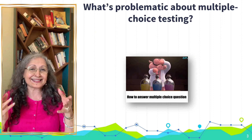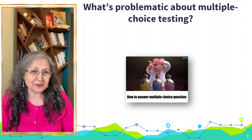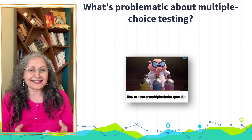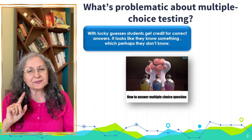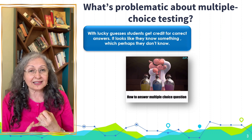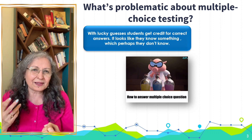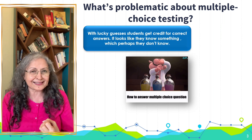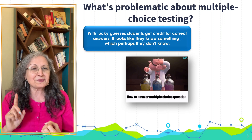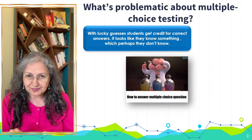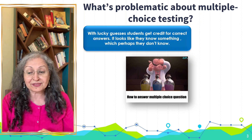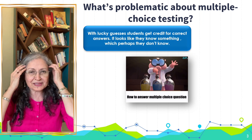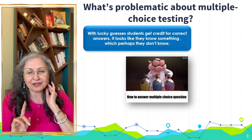That's the way children attack multiple choice questions — and many adults as well. One of the problems is that just by some lucky guesses, the students can get it right. So it's impossible to know really whether they truly know the material. That's one of the things going against MCQs if they are not framed well.